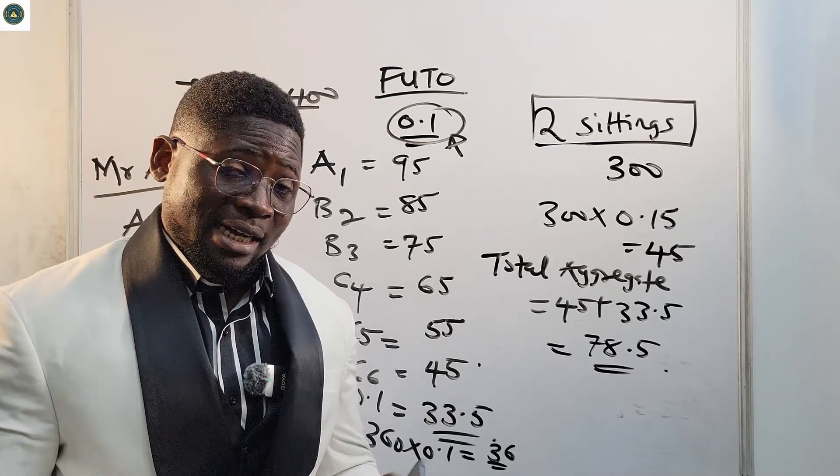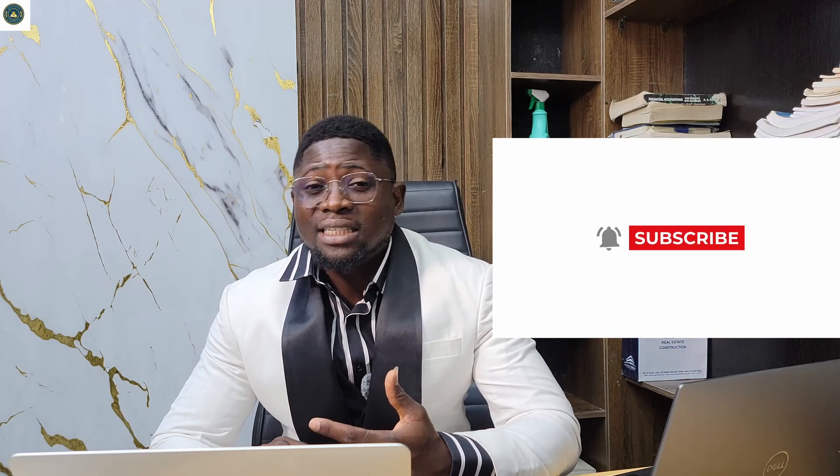Welcome back. By now you should know how to calculate your aggregate score using your JAMB result and O-level grades, and what it means to have your result in one sitting versus two sittings. Thank you for watching. If you have any questions, please drop them in the comment section. Don't forget to like, share, and subscribe to our channel to get access to other information. See you soon.